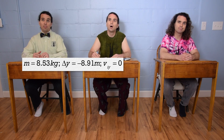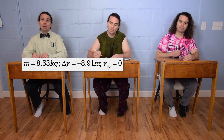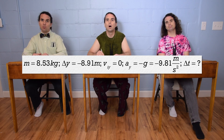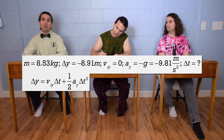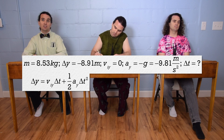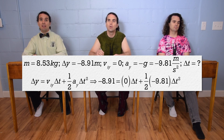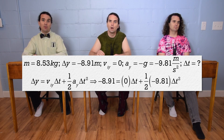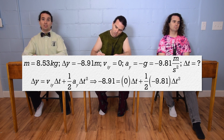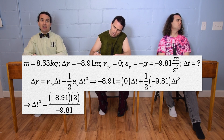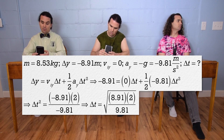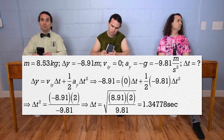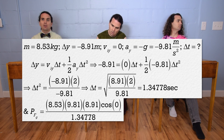While the pumpkin is in free fall, we already have the displacement and initial velocity. The acceleration in the y direction equals negative g, or negative 9.81 meters per second squared. We can use the uniformly accelerated motion equation: displacement in the y direction equals velocity initial in the y direction times change in time, plus one half times acceleration in the y direction times change in time squared. Substituting in gives us negative 8.91 equals zero times change in time plus one half times negative 9.81 times change in time squared. Multiplying by two and dividing by negative 9.81, the negatives cancel, and taking the square root gives change in time equals the square root of 8.91 times two divided by 9.81, which is 1.34778 seconds.